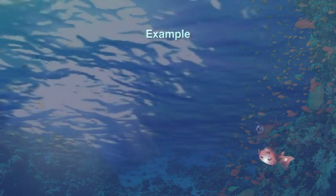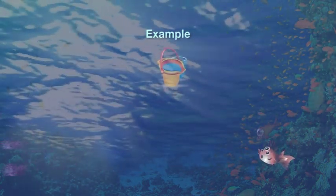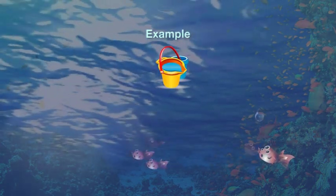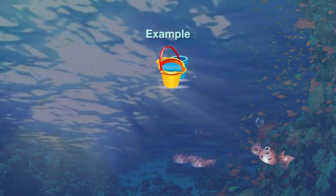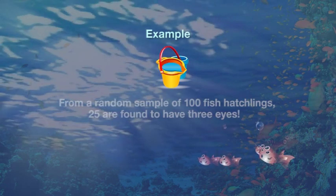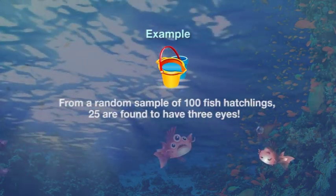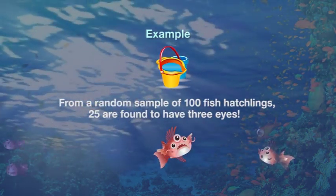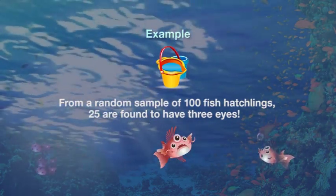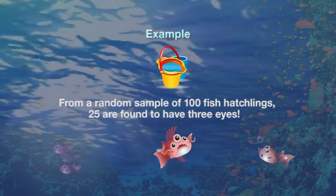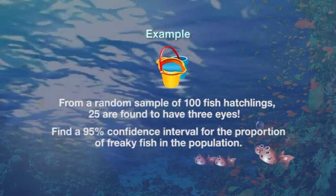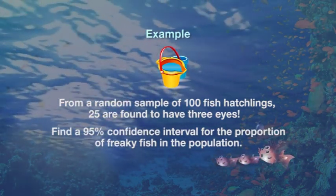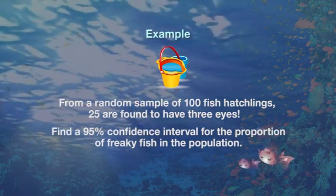Imagine we randomly catch 100 fish hatchlings in a bucket from a pond where some of the fish have become a bit freaky. Out of these 100 fish, 25 of them we observe have actually got 3 eyes — in other words, some of these fish are a bit sick. Based on this sample, how can we find a 95% confidence interval for the proportion of freaky fish in the entire pond, in other words the entire population of fish?